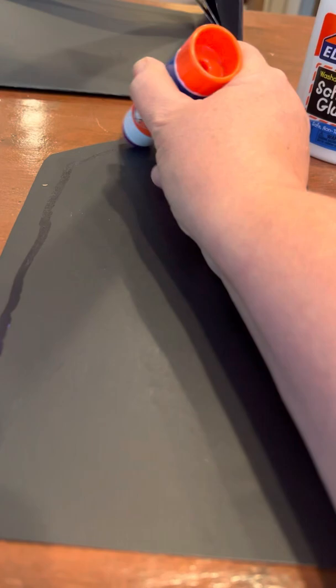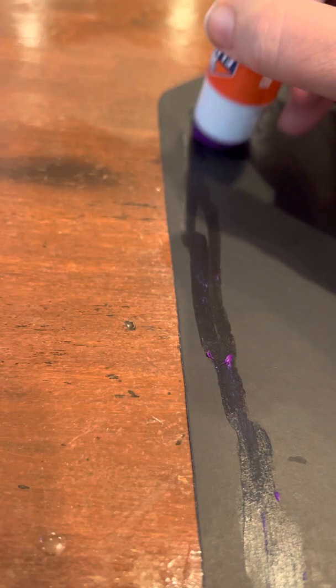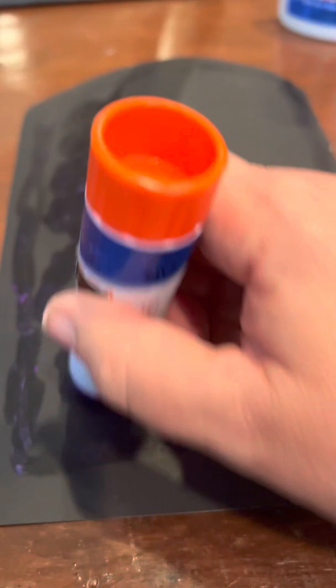With the glue stick you just go on there and sort of outline your window. I tried to make it look like the stained glass with the dark lines, but that doesn't really work. Let's be truthful, they're just going to put it everywhere. I would just recommend kind of doing it in sections with the glue stick.